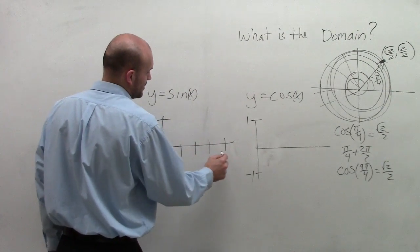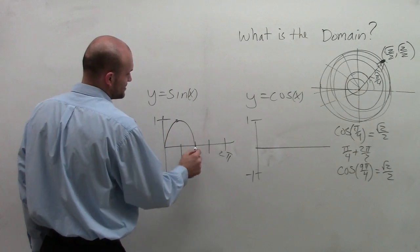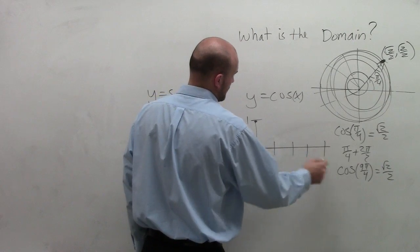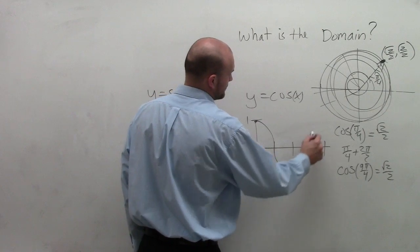And then we say the sine graph starts at 0, goes up, goes down, goes down, goes up. And the cosine graph goes down, goes up.